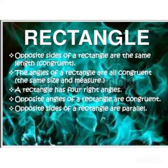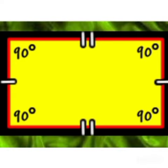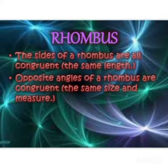Rectangle. In a rectangle, opposite sides are the same, nothing but congruent. The angles of a rectangle are congruent — a rectangle has four right angles. Opposite sides of a rectangle are parallel.